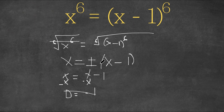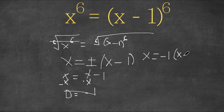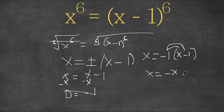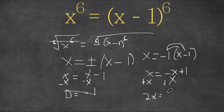Now let's try the negative version: x equals negative 1 times x minus 1, which is the same as negative x minus 1. We distribute the negative 1: negative 1 times x is negative x, and negative 1 times negative 1 is positive 1. So x equals negative x plus 1. Adding x to both sides gives 2x equals 1, and dividing by 2 gives x equals 1/2.